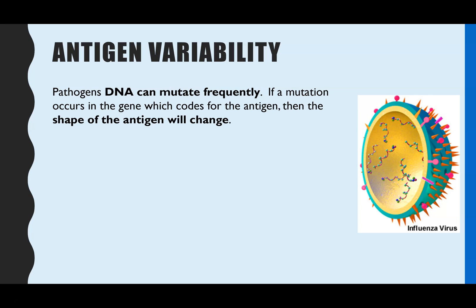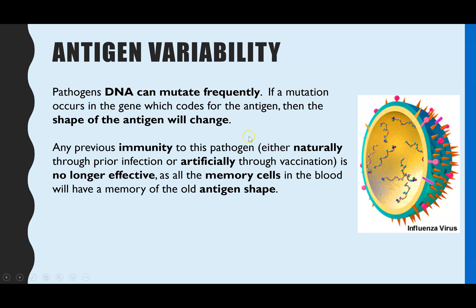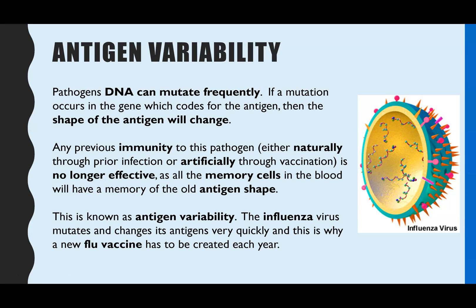One thing to bear in mind is antigen variability, which explains why certain vaccines have to be updated. Pathogens' DNA can mutate frequently, and if a mutation occurs in the gene coding for the shape of the antigen, the antigen shape changes. This means the memory B cells you have will no longer be effective, because they store the antibody for the old antigen shape, not the new one. That's why for influenza we create new vaccines every year - antigen variability can compromise how effective vaccines are long term.